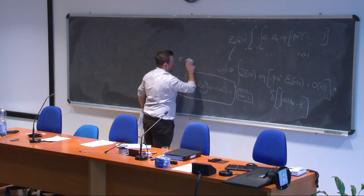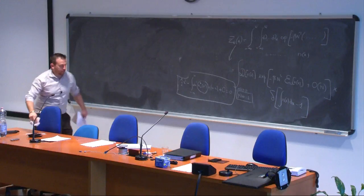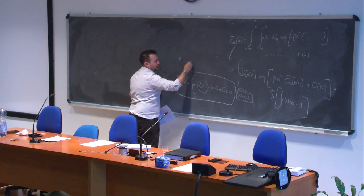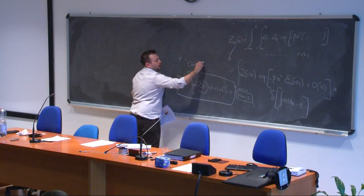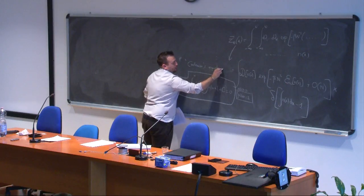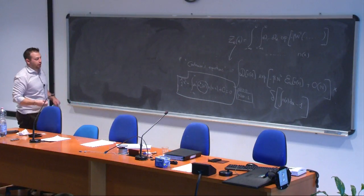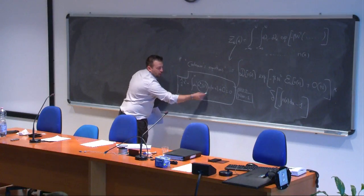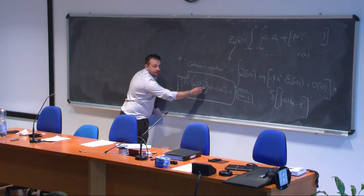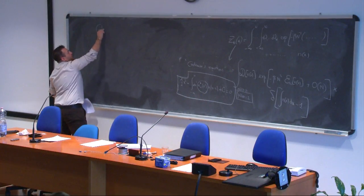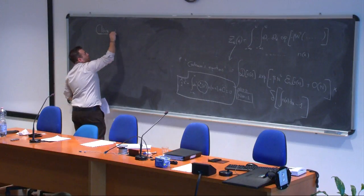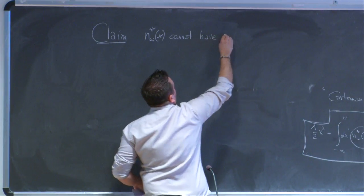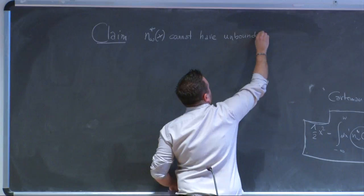In the mathematics literature, this type of integral equation is known as Carleman's equation. There is a standard technique to solve it. First, we make an observation: the claim is that n*_ω(x) cannot have unbounded support.